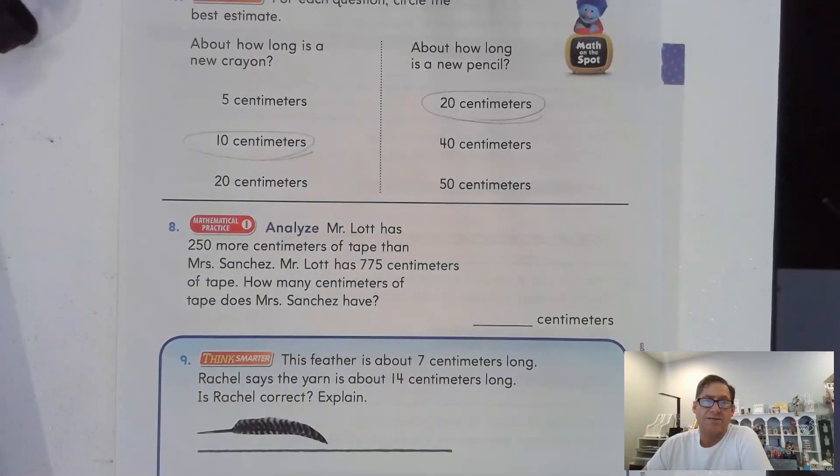Mr. Lott has 250 more centimeters of tape than Mrs. Sanchez. Mr. Lott has 775 centimeters of tape. How many centimeters of tape does Mrs. Sanchez have?